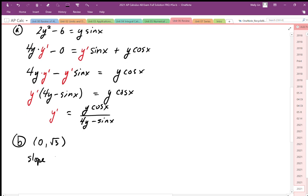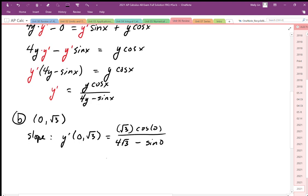So slope is going to be calculated from the derivative at that point. At that point x is 0, y is root 3. So when I plug that into my expression, y is root 3, x is 0, so I get root 3 cos 0 over 4 times root 3 minus sine of 0. This simplifies to root 3 times 1, cosine of 0 is 1.